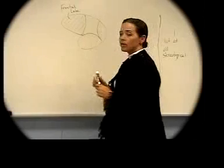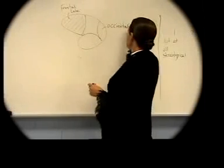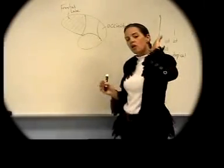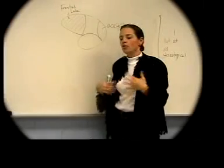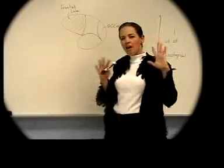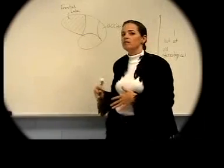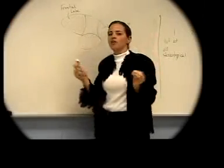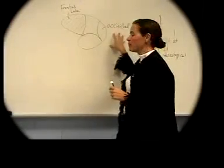The back part of the cortex is called the occipital lobe. The occipital lobe is really involved in visual processes. So if you have an accident and hit your head hard enough in the back, you're probably going to have some kind of visual sensation. In cartoons they make fun of it by showing birds circling around your head — they're just talking about having a visual sensation.